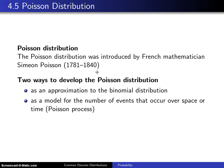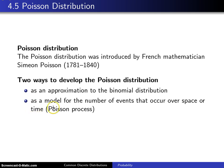There are two ways to develop the Poisson distribution, and these two ways provide an outline for how the Poisson distribution will be introduced here in section 4.5. The first is you can think of the Poisson distribution as an approximation to the binomial distribution. The second way of thinking of the Poisson distribution is as a model for the number of events that occur over space or time, and this particular type of model is known as a Poisson process.